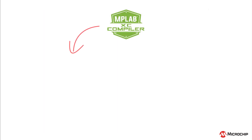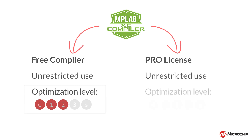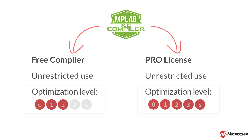The compilers can be run unlicensed and with no charge as a full-featured tool with basic optimizations. Or you can purchase a Pro license, which unlocks a higher level of optimization, significantly reducing the size and execution time of generated code.